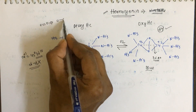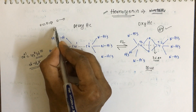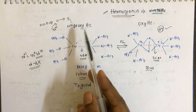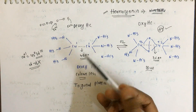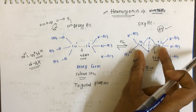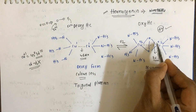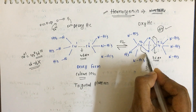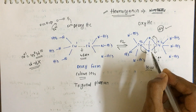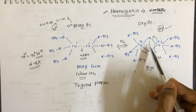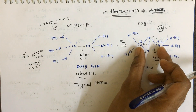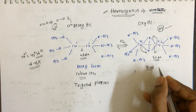As we saw in the case of hemerythrin, when oxygen is converted into the peroxy form there is a one-electron transfer from each iron. Similarly here, as electrons transfer from each copper unit to the oxygen, the distance between the two copper units decreases. Each copper gives one electron to oxygen, so the oxygen state changes, and this results in the blue color.